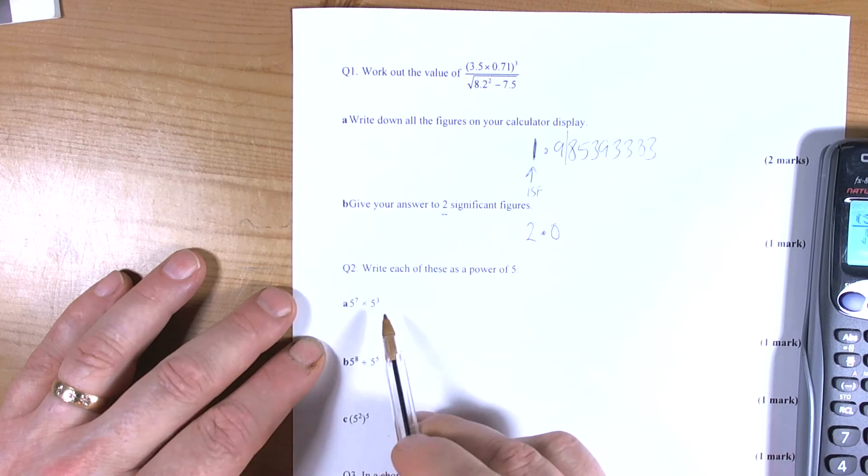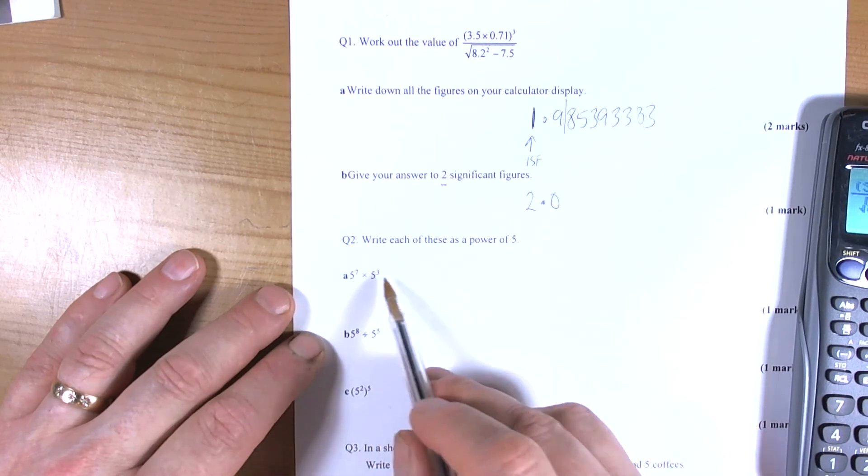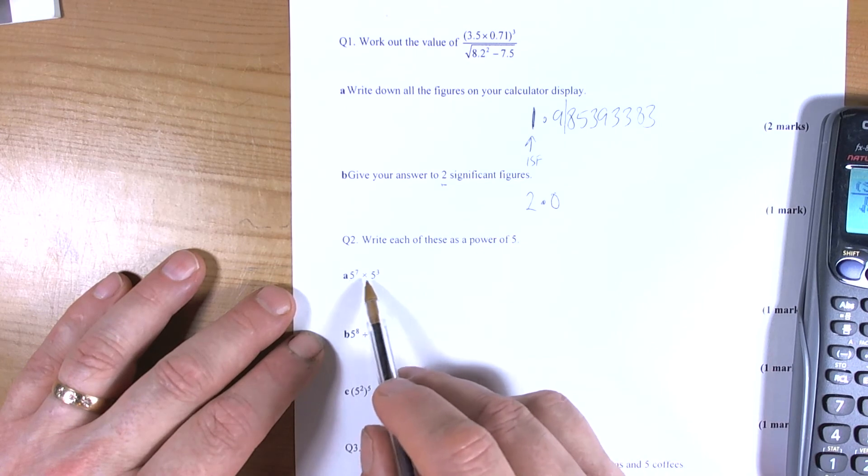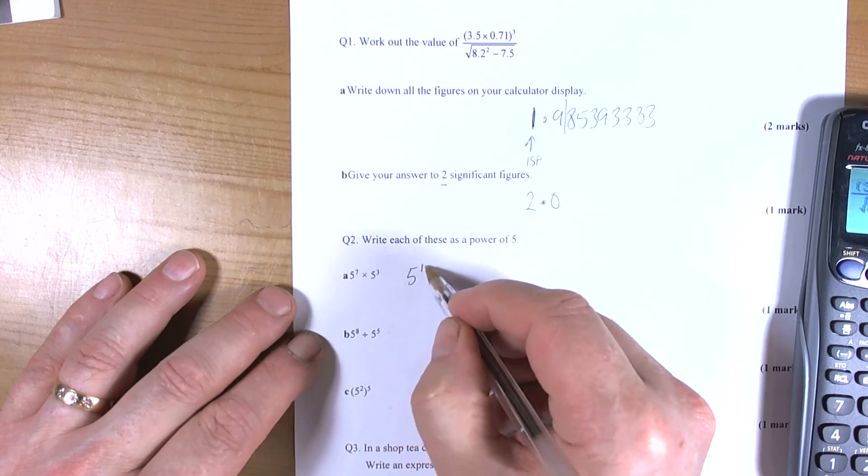Ok so the next question goes on and talks about powers of 5. So when we're multiplying with the same bases, the base number being the big number and the powers, then we add the powers. So this will be 5 to the power of 10.